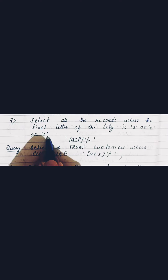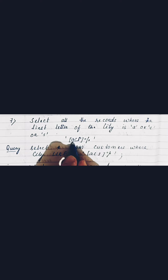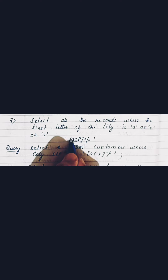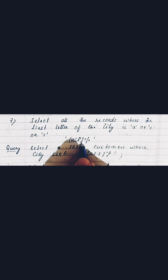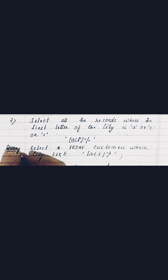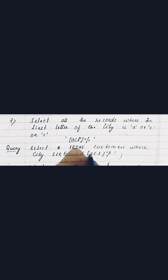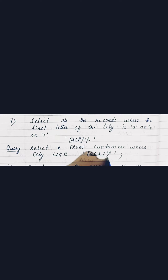Moving to the next question: select all the records where the first letter of the city is 'A', 'C', or 'S'. We place those options inside square brackets to indicate the first letter can be any one of those three, followed by a percent sign for any remaining letters. The query is: SELECT * FROM customers WHERE city LIKE '[ACS]%'.